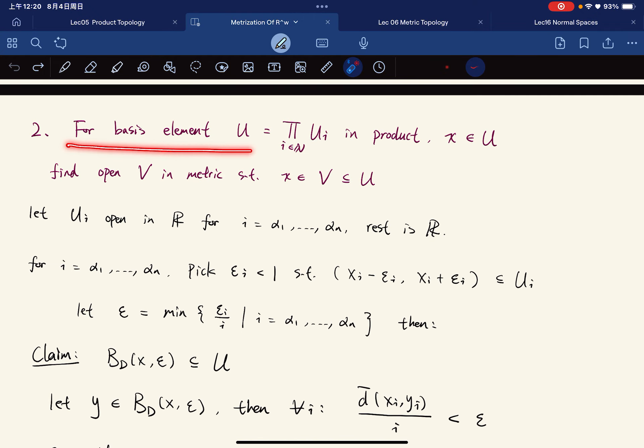For the basis element in the product topology, x contains U, we want to find V open in the metric topology, such that x is in V and V is a subset of U.